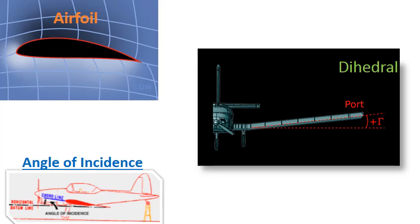There are these factors and other factors that go into designing a wing and determining exactly what its characteristics are going to be. We're just going to do an overview of the planform and the general characteristics associated with each type.